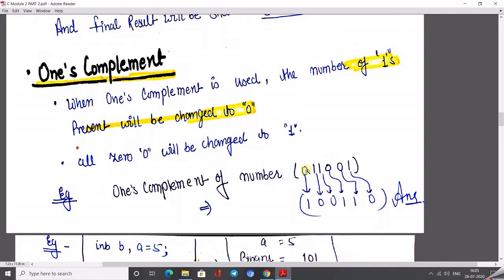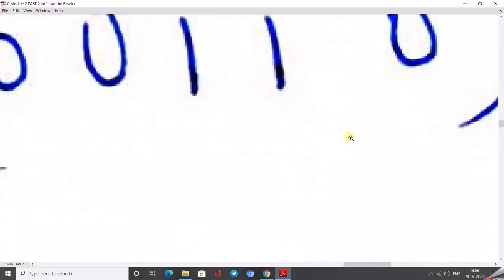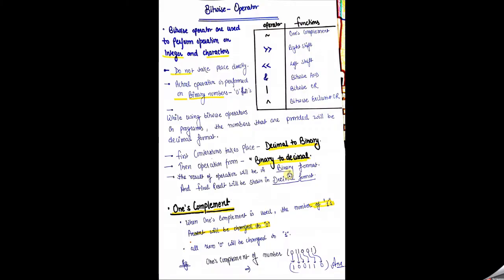So what do we do? At the place of 0, we write 1, and at the place of 1, we write 0. Again, 0 becomes 1, 0 becomes 1, and 1 becomes 0. This is our final answer after converting all 1s into 0 and all 0s into 1s.